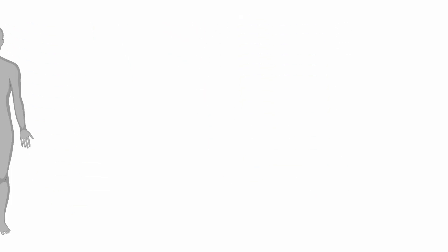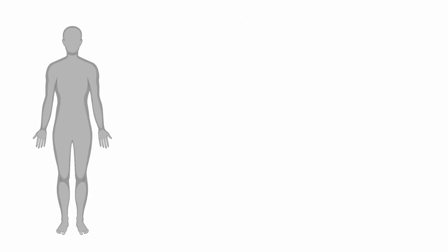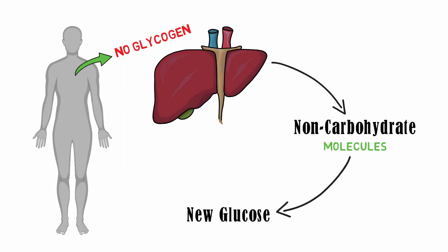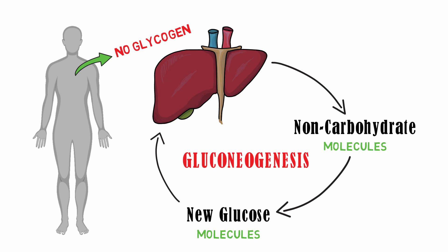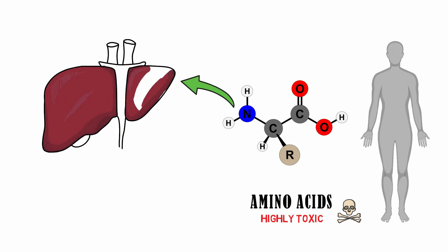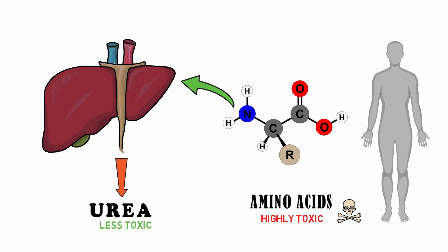If there is a shortage of glycogen, then the liver makes glucose from non-carbohydrate molecules for the needs of the body. This process is called gluconeogenesis. Our body cannot store excess amino acids because they are toxic, so excess amino acids are broken down into urea.